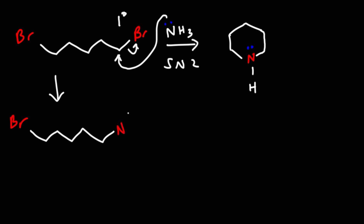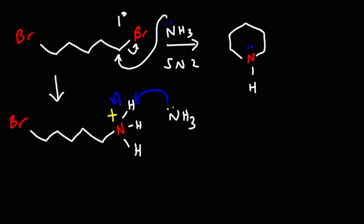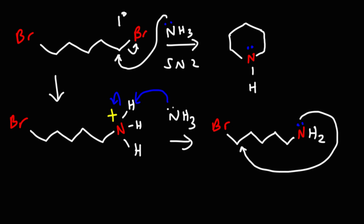Right now the nitrogen has three hydrogen atoms attached to it, so it has a positive formal charge because it has a total of four bonds. We need this nitrogen to behave as a nucleophile and attack the other carbon to close and form the ring, but before we can do that we need to remove a hydrogen from this nitrogen. We could use another ammonia molecule to do that, and now this NH2 is once again nucleophilic. An intramolecular reaction is going to happen — this nitrogen will attack the carbon and kick out the leaving group.